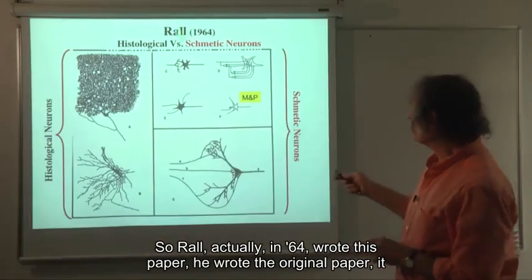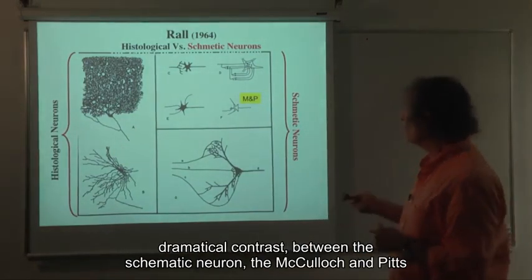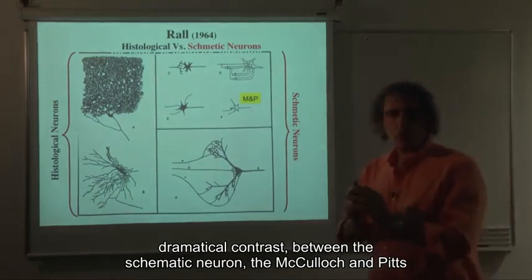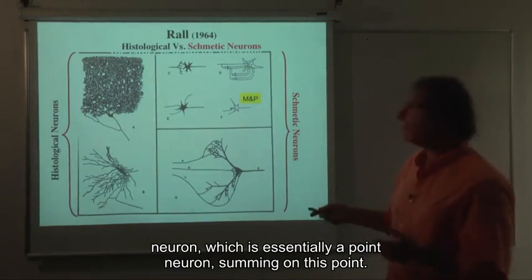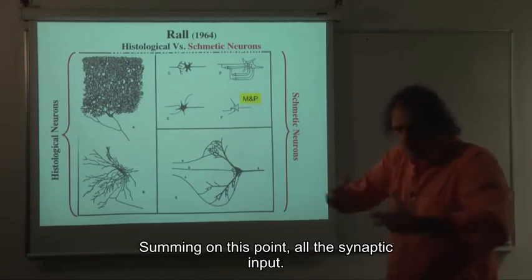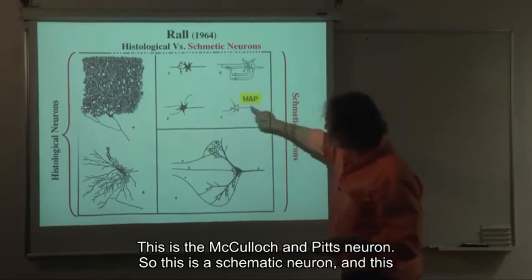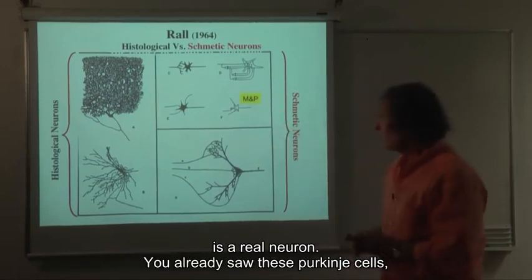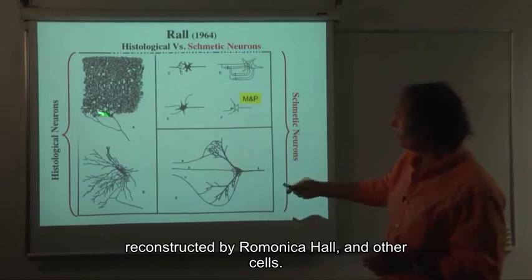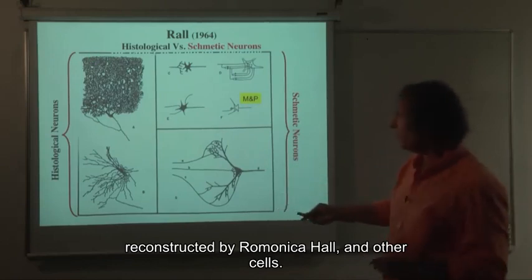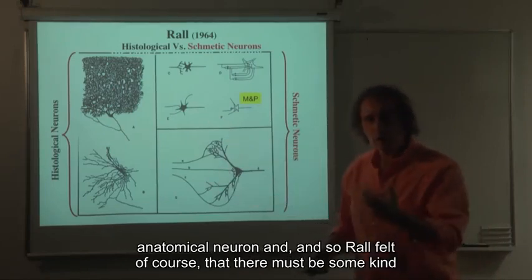Rahl actually in 1964 wrote this paper — the original paper was from 1959 — but in 1964 he wrote this paper showing the dramatic contrast between the schematic neuron, the McCulloch and Pitts neuron, which is essentially a point neuron summing all the synaptic input at this point, versus a real neuron. You already saw these Purkinje cells reconstructed by Ramon y Cajal and other cells. This is the real neuron — the distributed, histological, anatomical neuron.